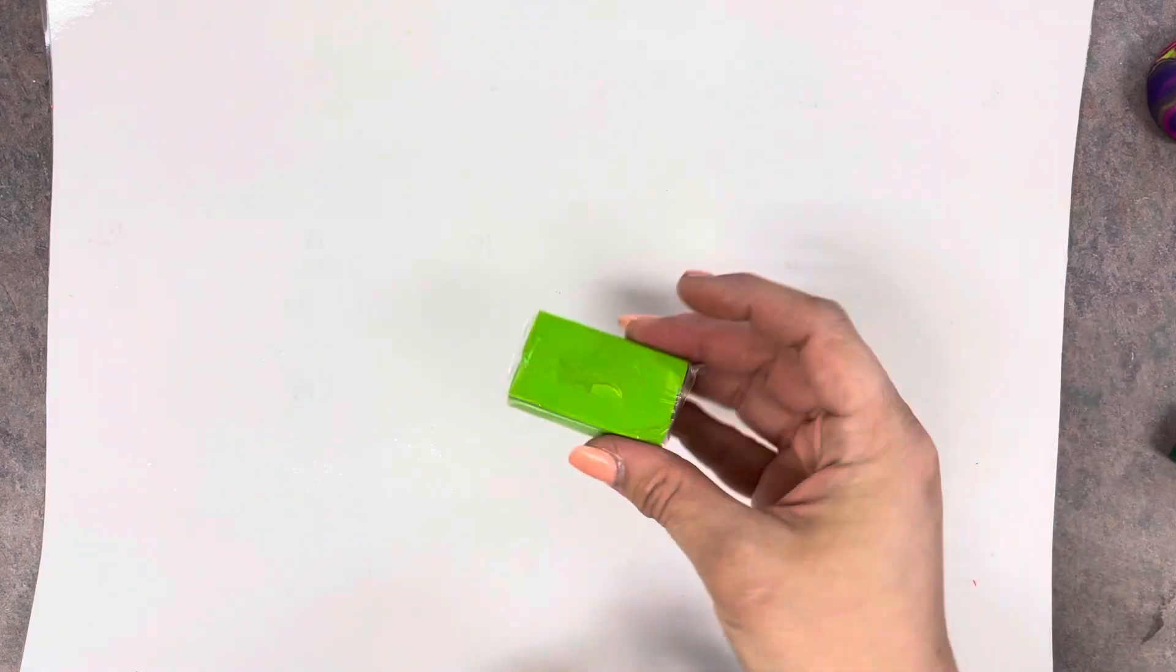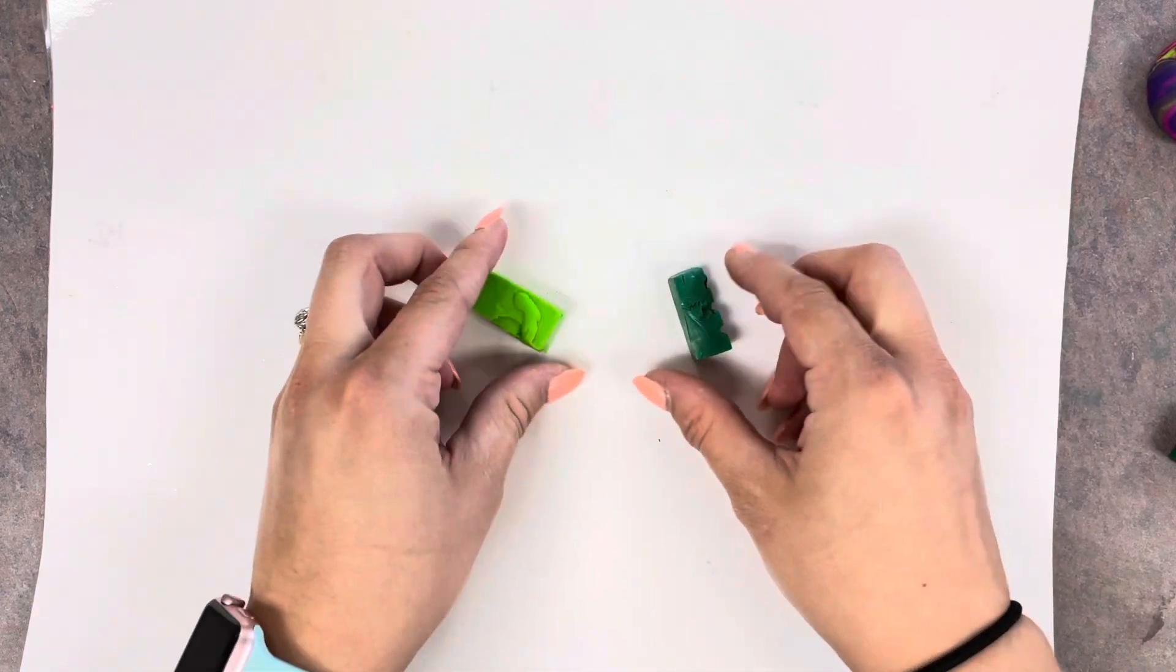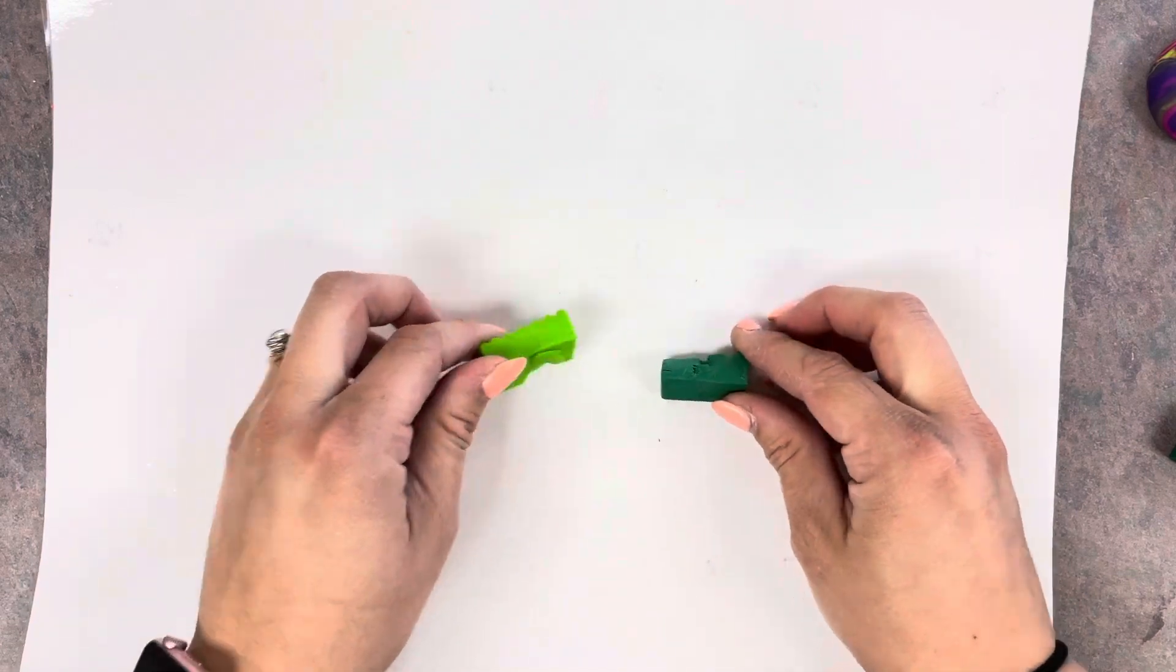We're going to use polymer clay, which is a kind of clay that you can bake in the oven after you make your creation. We're going to use two little pieces and marble them together.